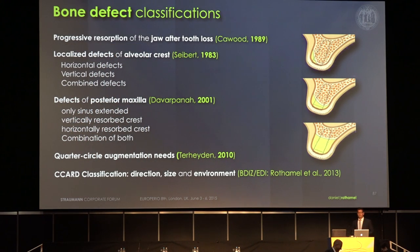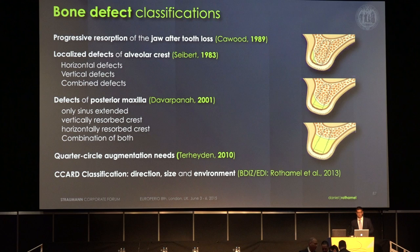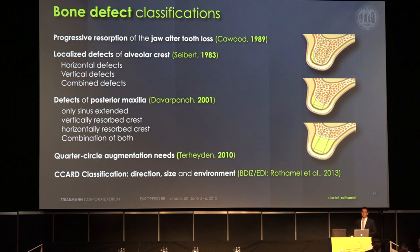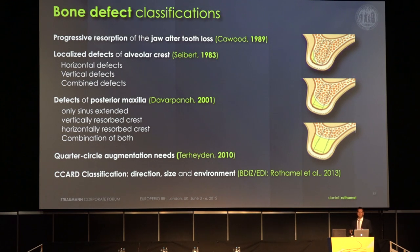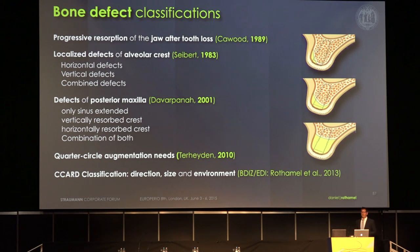We want to talk about bone defect regeneration today, so it makes sense to first look at different bone defect classifications. We all know the K-word classification. The mainly used classification for localized defects is the Cybert classification, differentiating horizontal defects, vertical defects, and combined defects. There are numerous other authors publishing their own classifications, but what we found was that they only describe the defect itself — not taking care of the environment. So we published the C-card classification that allows for better estimation of the regeneration capacity of a defect depending on the environment.